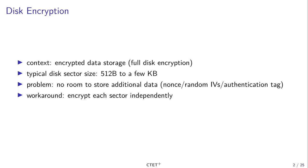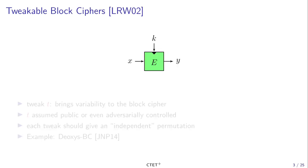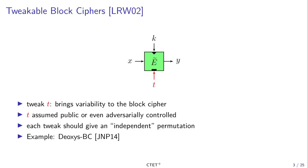Of course, having a different key for each sector is very impractical, so a good solution is to use a tweakable block cipher. Tweakable block ciphers are a keyed primitive that generalize standard block ciphers by taking an additional input called a tweak, whose goal is to bring variability to the block cipher. We can assume that T is public or controlled by the adversary without decreasing security.